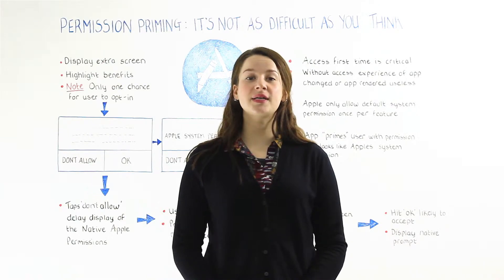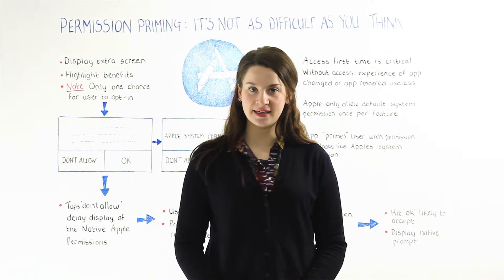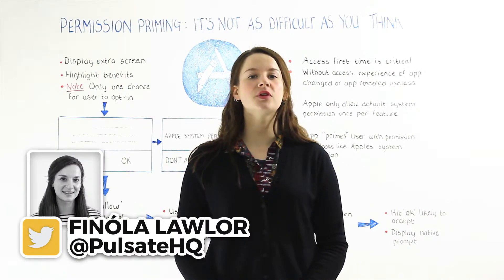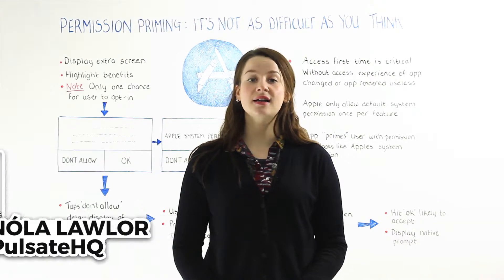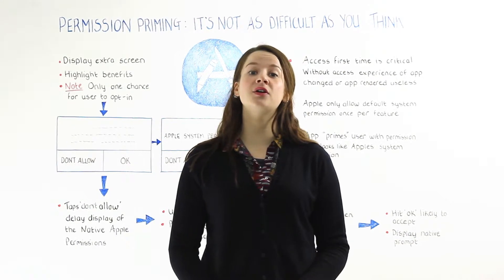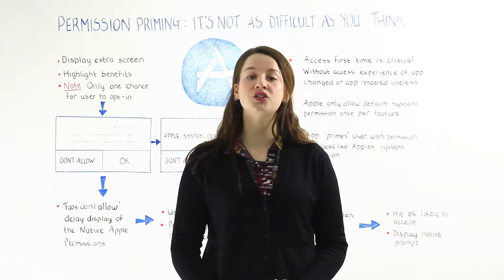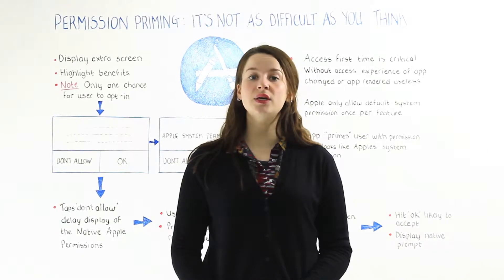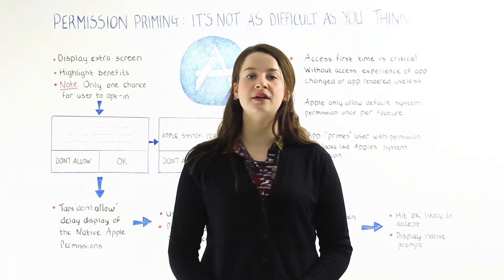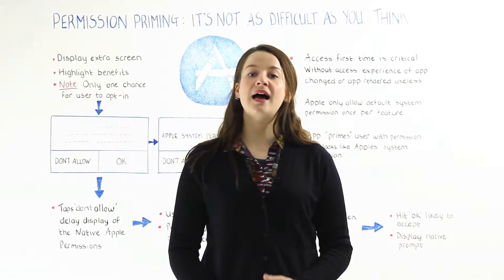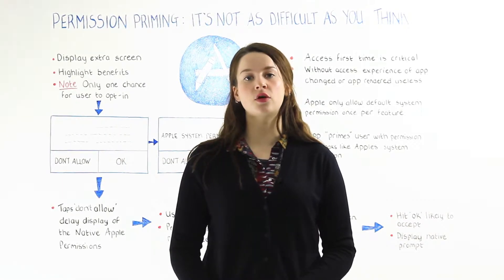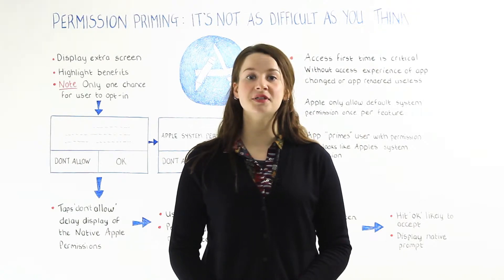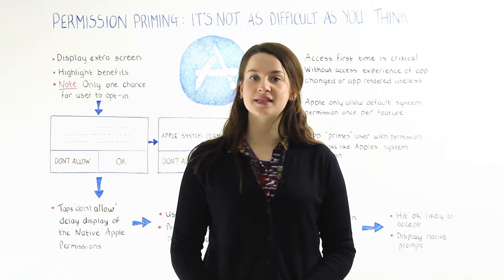Hi and welcome to this week's episode on Pulsate Academy. My name is Finola and I'm from the customer success team here at Pulsate. Last week we took a look at how you can ensure that your users opt in to your permissions, and this week we're going to build on that by looking at a different method called permission priming that has an opt-in rate of 99%. So let's get into it.